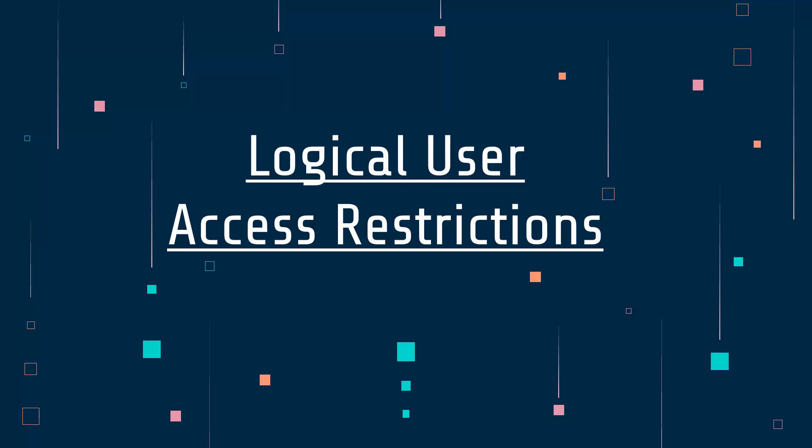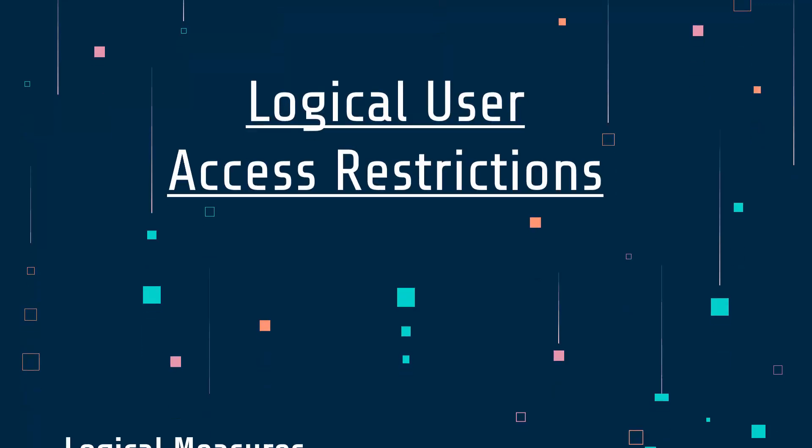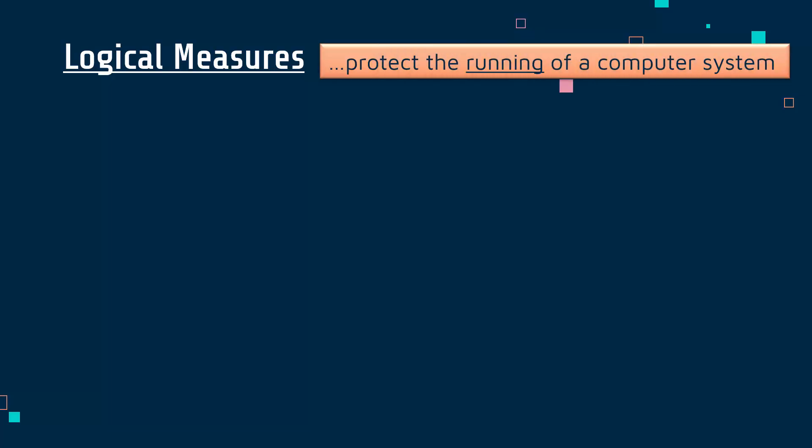Having looked at some physical user access restrictions — measures which can stop people accessing things they shouldn't be accessing — let's look at some logical ones. The word logical in this context just refers to the fact that these are protecting the running of a computer system, whereas a physical measure is trying to protect the surroundings of a system, making sure somebody can't just walk in and pick up a laptop or edit a server. A logical measure is much more about somebody being able to actually use the system, so assuming an attacker has managed to gain access to your laptop or server, what measures have you got on the actual laptop or server to stop them doing things they shouldn't do?